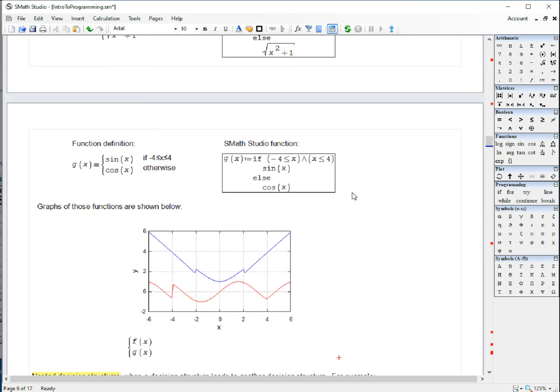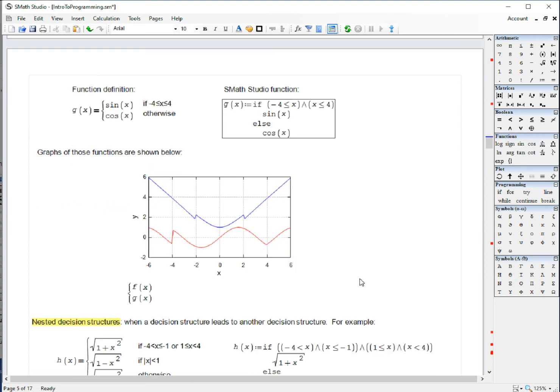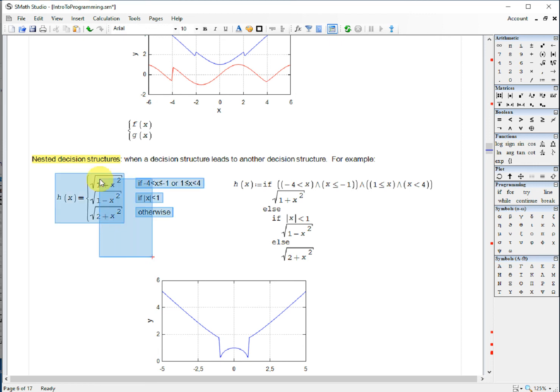Now, in these two cases, we had a single condition and two possible outcomes. If we need three possible outcomes, like here, we can use a nested IF statement.